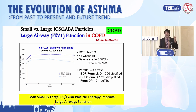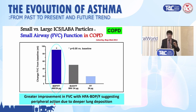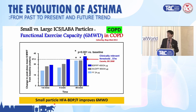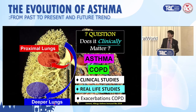Repeating the equation for COPD: FEV1 (large airways) — yes, small and large ICS-LABA improve large airway function. FVC (small airways) — only small particles improve FVC in COPD, not large particles, suggesting the peripheral action. And for functional exercise capacity — six minute walk distance — after one year, only extra fine improved the clinically relevant threshold of more than 37 meters. So we've done the same equation in COPD. So, real life studies.